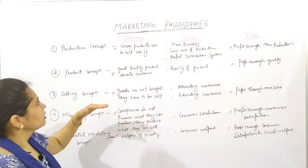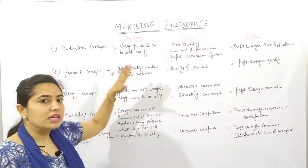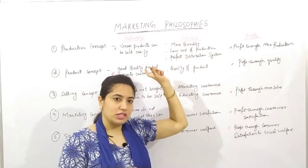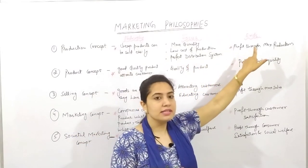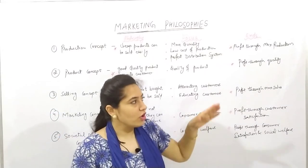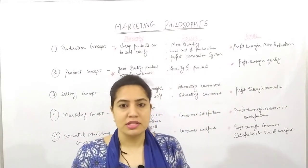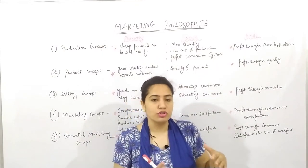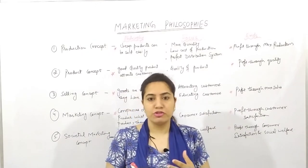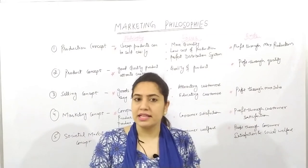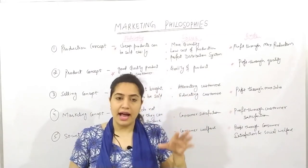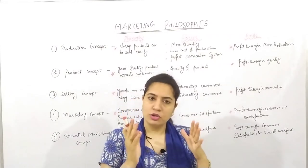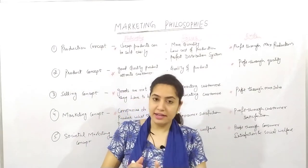Let's begin. I will tell you what things are used in each concept under the heading, then I will tell you the focus — meaning what each philosophy focused on — and ends means where that concept or philosophy ultimately ends. Earlier, marketing was only related to production and selling of goods, but gradually it changed because the customer is the king of the market. Customer satisfaction is also important; if your customer is not satisfied, they won't come back to buy your product, and it will affect your sales and goodwill. So marketing is now not only about selling but also about customer satisfaction.